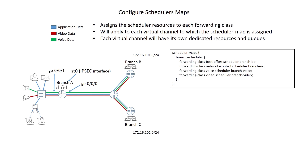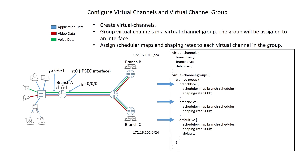The scheduler map bundles different schedulers into a group of settings that can be applied to an interface. Instead of applying the scheduler map to an interface, which is what you usually do, we're going to assign it to virtual channels within a virtual channel group. Each channel will receive the resources specified within the scheduler map. Where the transmit rate in the scheduler applies to the rate traffic is transmitted from queues on an interface or channel, the shaping rate within the virtual channel is a hard limit on the transmit rate of that channel regardless of how many resources are configured in the scheduler — it's like breaking it out into its own separate physical interface.